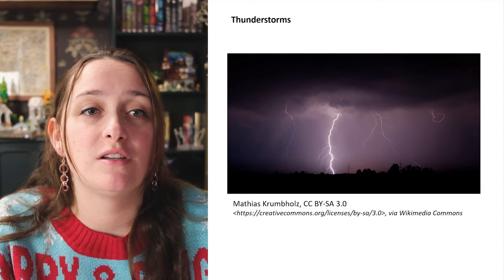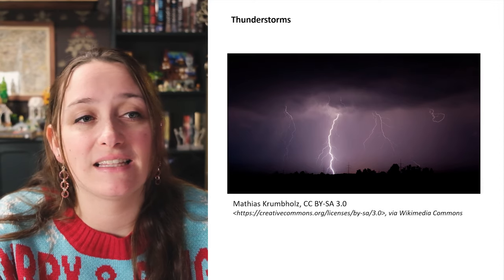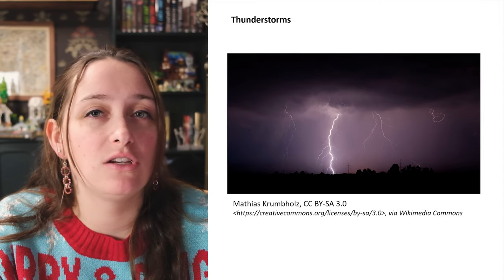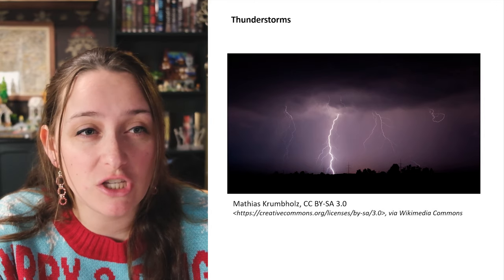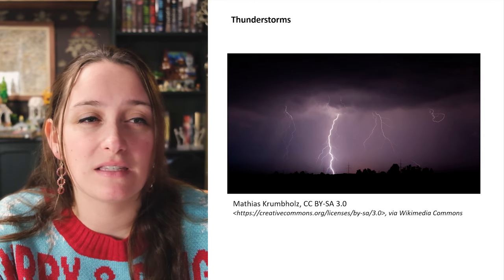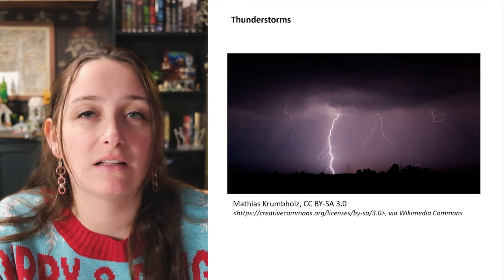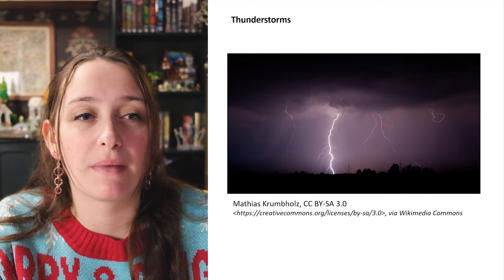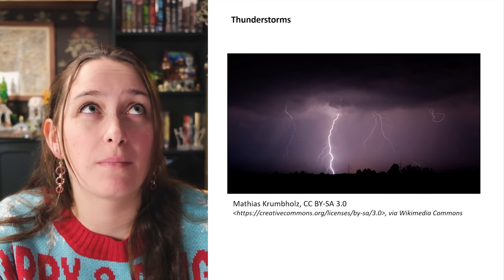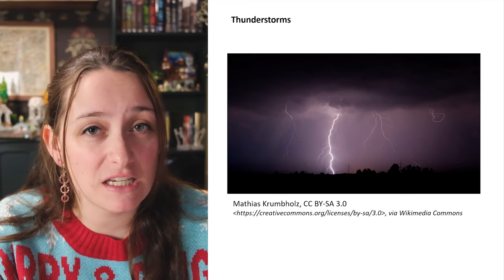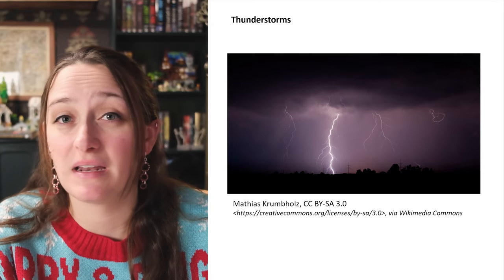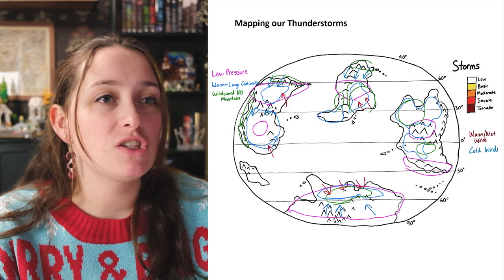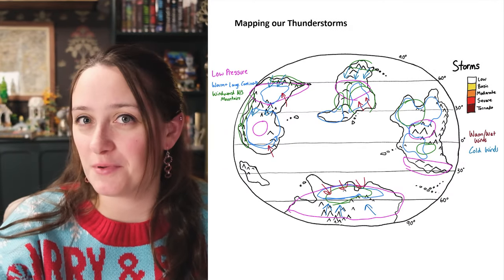Polar regions are the least likely to have thunderstorms due to extreme cold and insufficient moisture. If you have east-west mountains parallel to your wind belt, this keeps warm and cold air masses from mixing too much, and you'll also see fewer thunderstorms.